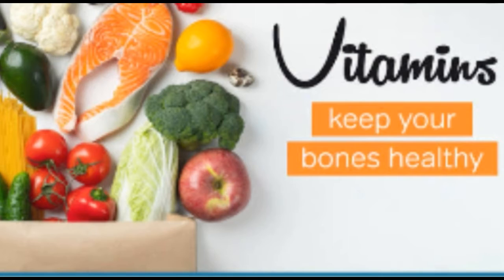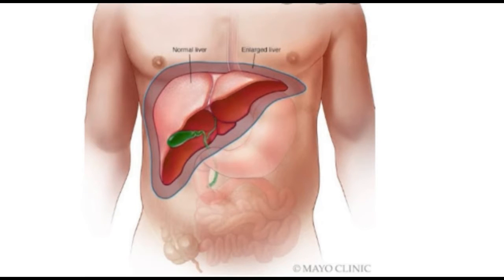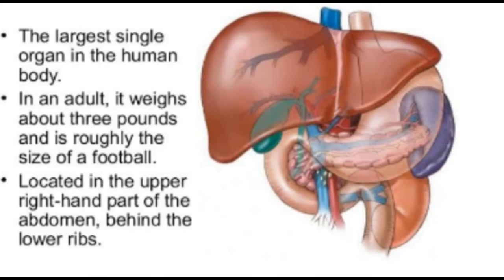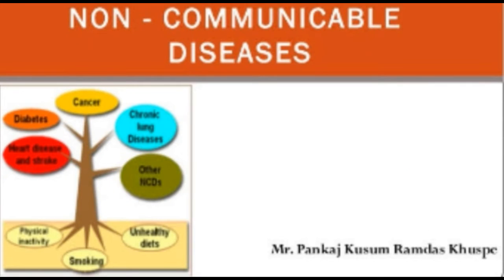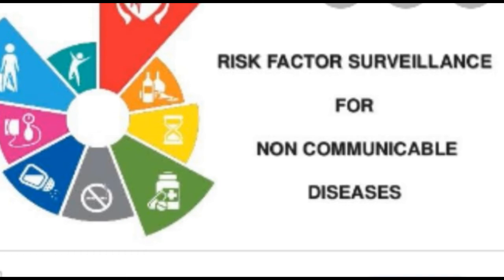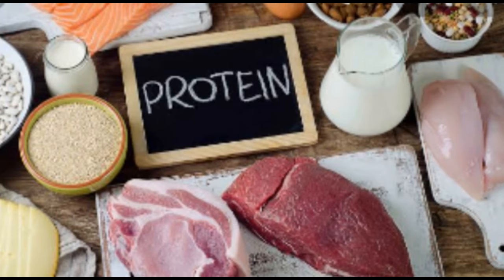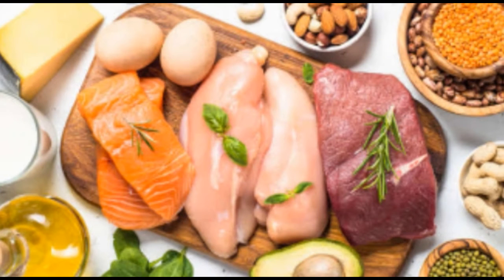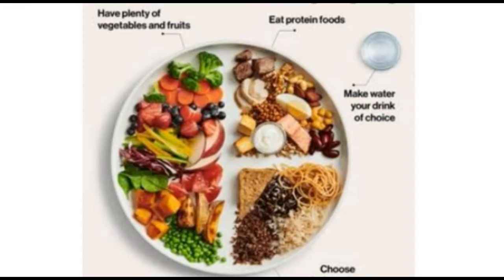Some diseases are caused because a part of the body stops working properly. Such diseases affect the liver, heart, kidneys, or other organs of the body. These are deficiency diseases and they are not spread from one person to another. For example, if my liver is not working properly, it cannot spread to another person. That is why we call them non-communicable diseases. Deficiency diseases can be prevented by eating foods containing vitamins, like fish, vegetables, green vegetables, eggs, protein, milk, cheese, fruits, and dry fruits.